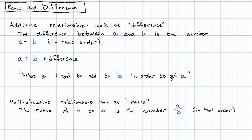Why does that describe a multiplicative relationship? Well, in this case, a is equal to b times the ratio.